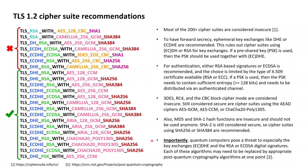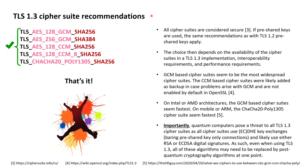After this lengthy discussion on TLS 1.2 cipher suite recommendations, let's move on to TLS 1.3 cipher suites. The story on security recommendations for TLS 1.3 is quite short: all five cipher suites of TLS 1.3 are considered secure. If pre-shared keys are used, the same recommendations as for TLS 1.2 apply. The choice of TLS 1.3 cipher suite mostly depends on availability in a TLS implementation, interoperability requirements, and performance requirements.